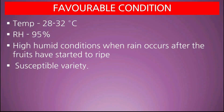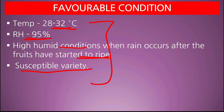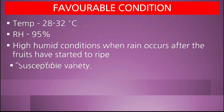Favorable conditions: temperature 28 to 32 degree centigrade, relative humidity more than 95%, high humid condition when rains occur after fruits have started to ripen, and susceptible variety। अगर यह सब conditions आएं तो disease ज्यादा मात्रा में आती है।